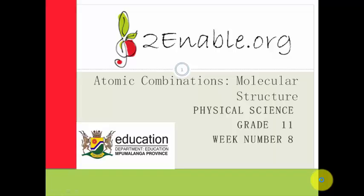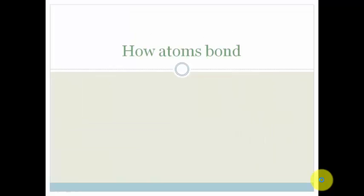Good day, Great Limits. Welcome to lesson 2 in week 8. We're still talking about atomic combinations and molecular structure. In this lesson, we're going to talk about how atoms bond. And the easiest atoms to look at when it comes to bonding are hydrogen atoms, because they're made up of one proton and one electron. So let's look at them.